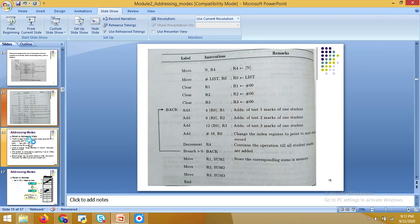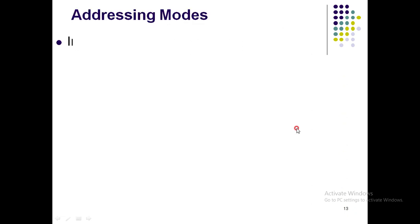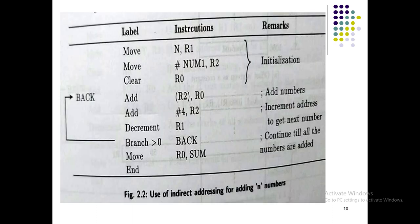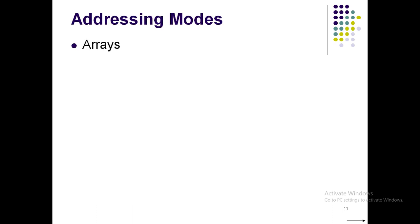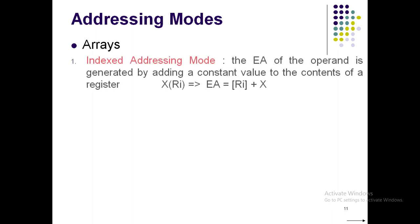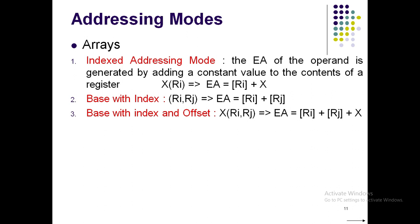Hello friends, welcome back to today's class. We are in module number 2, class 6. In the previous class, class 5, we discussed indexed addressing mode using arrays. I would like to touch upon the remaining part and finish these addressing methods so that we can move on to the next topic. There are three methods in arrays: method one is direct addressing mode using the register, the next is with base, and the third is with base, index, and offset.